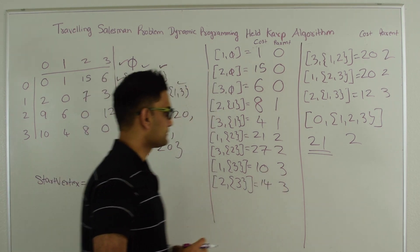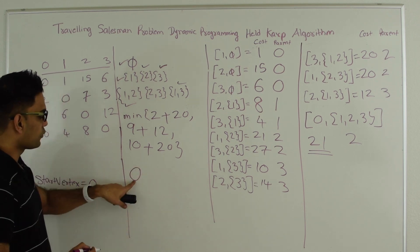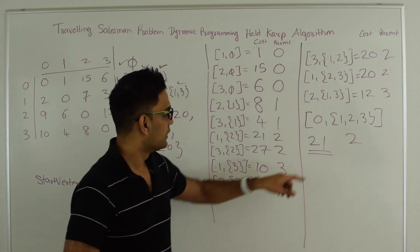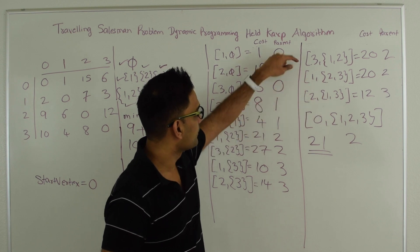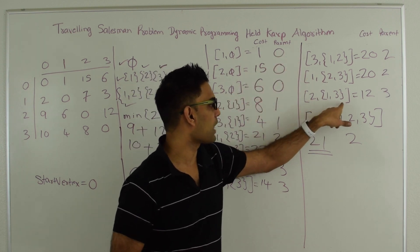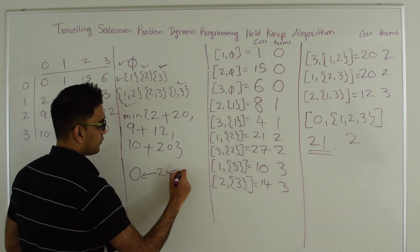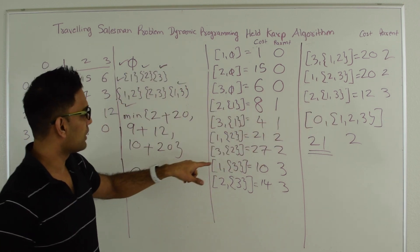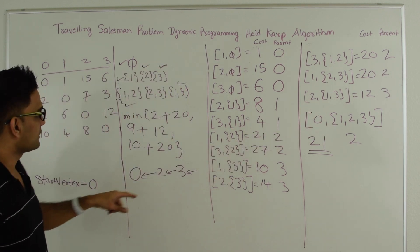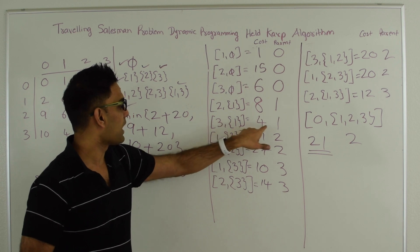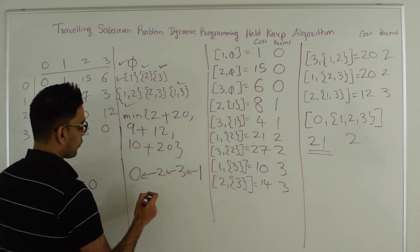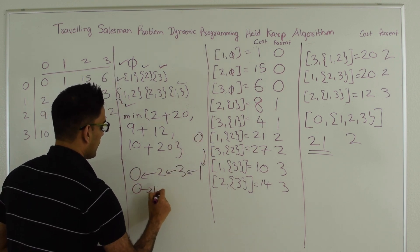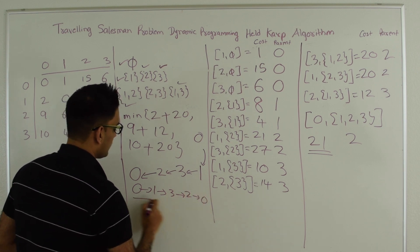Now let's recreate the tour. Our last vertex is 0 and we reach 0 from 2. The vertex right before 0 is 2. To find how we reach 2, we check the parent: we reach 2 via subset {1,3} from 0, and that comes from 3. Then we see how we reach 3 via subset {1} from 0 — that comes from 1. And 1 is reached from 0. So the tour is 0 → 1 → 3 → 2 → 0.